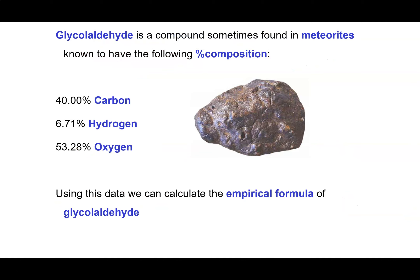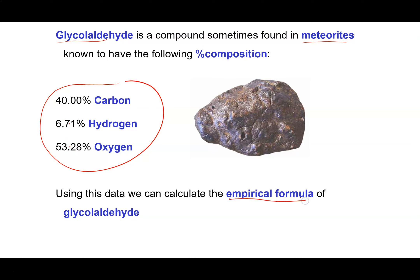Let's look at an example. Glycolaldehyde is a compound that we sometimes find in meteorites. It's interesting because glycolaldehyde is thought to be a precursor of carbon-based life forms. It turns out that glycolaldehyde has this percent composition by mass, and we know that we could take this percent composition and turn it into the empirical formula of glycolaldehyde.